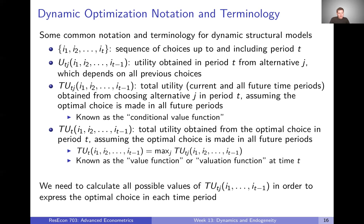Finally, we also have the total utility in time period T, which is the total utility obtained from making the optimal choice in time period T and in all future time periods. It's like looking over all the conditional value functions and choosing the optimal one. We call this the value or valuation function at time T.